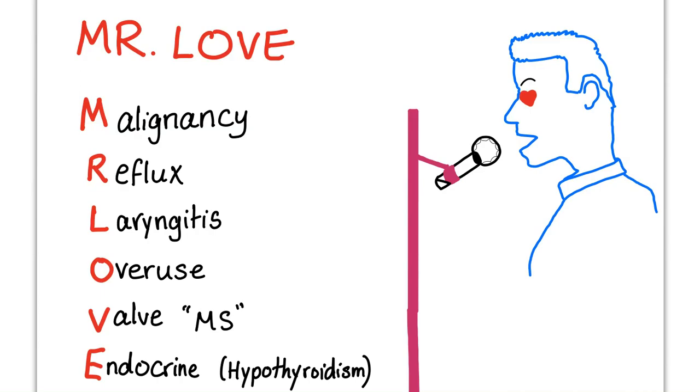R is reflux, which is GERD. L is inflammation in the larynx, laryngitis. O is overuse, such as Singer's nodule.